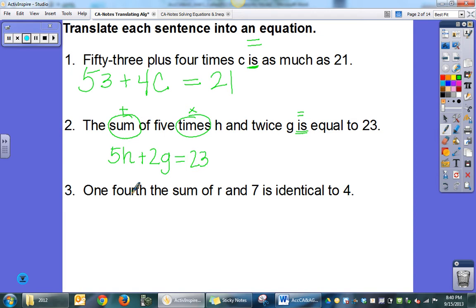One-fourth the sum of r and 7 is identical to 4. One-fourth times the sum of r and 7. Notice that it's one-fourth times the sum, so it's one-fourth times all of this, which means this needs to be in parentheses. Is identical to 4.